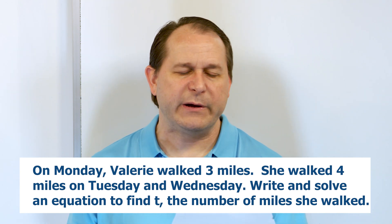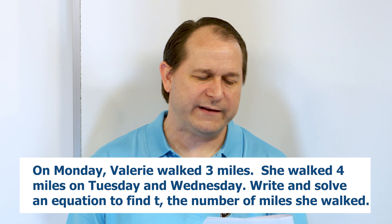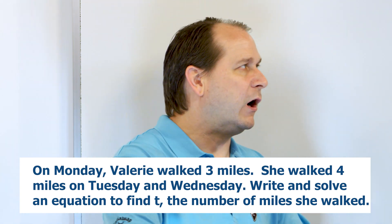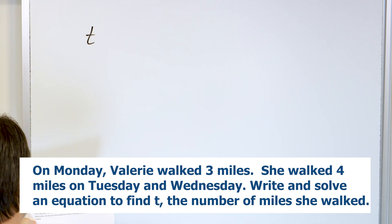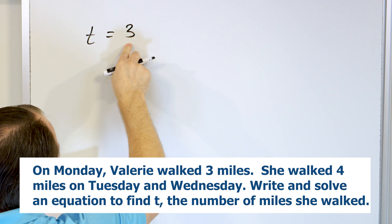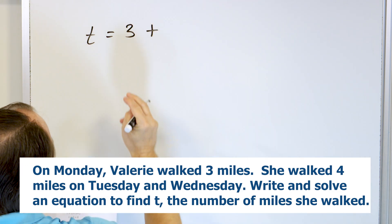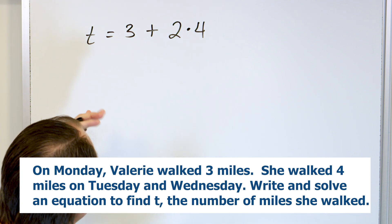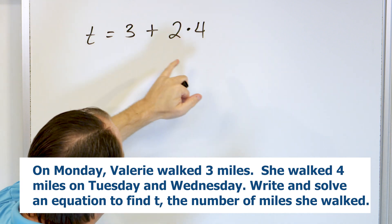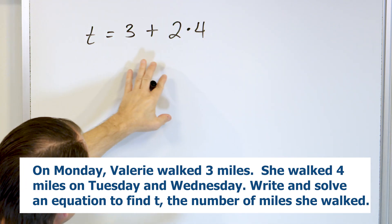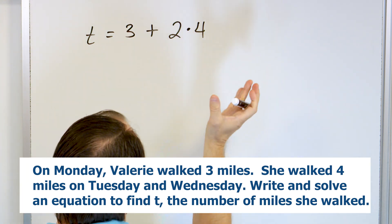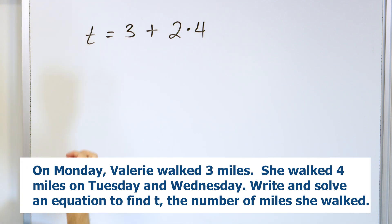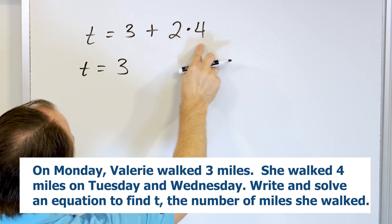Problem number two: on Monday, Valerie walks three miles. She walked four miles on both Tuesday and Wednesday. Write and solve an equation to find T, the total number of miles Valerie walked. So we're writing an equation to find T, the number of miles she walked. On Monday she walked three miles, then on two additional days she walks four miles each. We could have written it as three plus four plus four, but we're choosing to write it with addition and multiplication: three plus two times four.